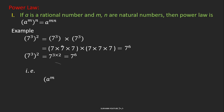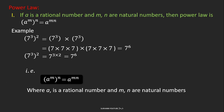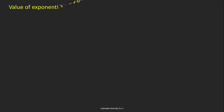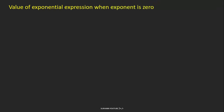Remember this formula — we will use it to solve this exercise, where 'a' is a rational number and m and n are natural numbers. Now, what will be the value of an expression when the exponent is 0? The value of any expression that has a 0 exponent is always equal to 1.